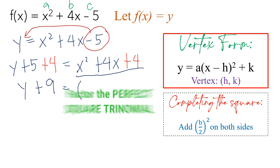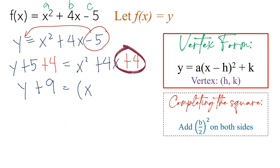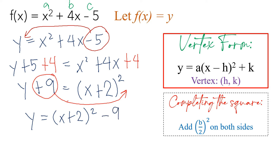To factor it, we just need to get the square root of the first and last terms. The square root of x squared is x, and the square root of 4 is 2. Copy the positive sign, and then add an exponent of 2 because this is a perfect square trinomial. Now, after factoring, we return the constant from the other side. Positive 9 transposed becomes negative 9, giving us y equals (x plus 2) squared minus 9. This is the vertex form of the quadratic function.